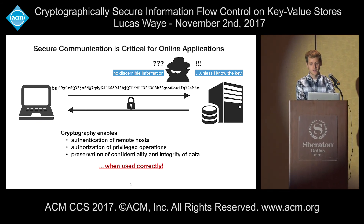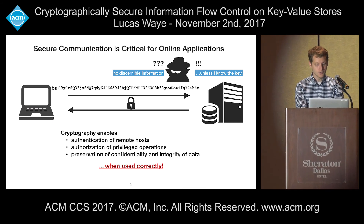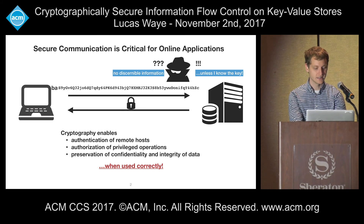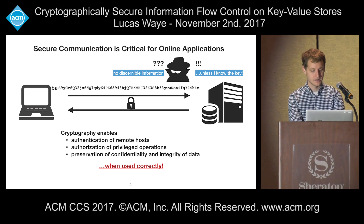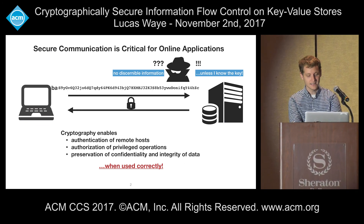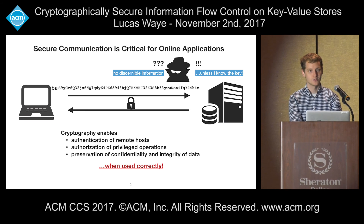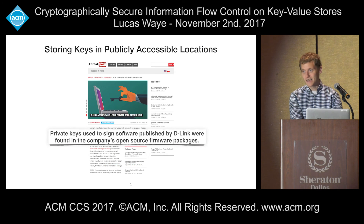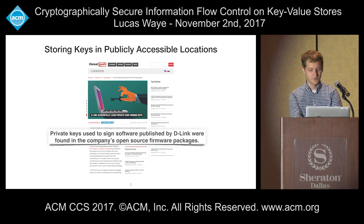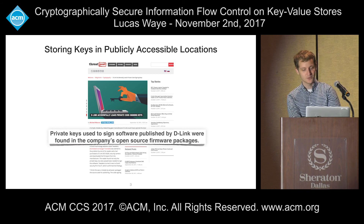But it only works when it's used correctly. For example, if a user wants to send their email password over the internet, they may encrypt it using a secret or private key, which renders it unreadable to outside parties. However, if the outsider knows this supposedly secret or private key, then they can recover the original plaintext and the password by decrypting the content. There have been many high-profile attacks stemming from this mistake — for example, D-Leak accidentally included their private keys embedded in their open source software, allowing a capable adversary to decrypt and inspect the communications of security surveillance cameras.